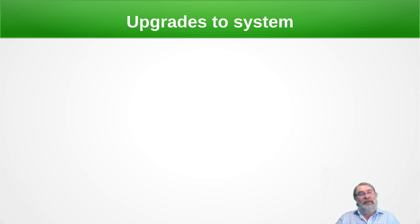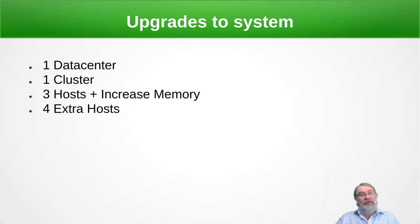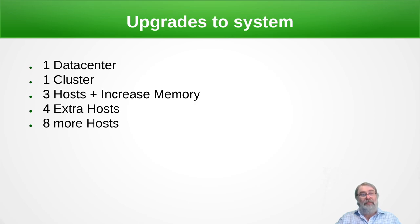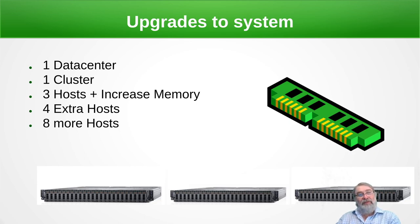We've had to upgrade the system a number of times. Although we kept the same structure, the first stage was to add memory to the three original hosts, taking them to 288 gigabytes of memory each. Then we purchased four extra hosts — modular servers — that allowed us to put four hosts in a single 2U chassis, which saved a lot of rack space. The actual usage kept going up and it was very popular, so we've purchased eight more hosts that will be coming online in the next academic year, giving us a lot more flexibility.